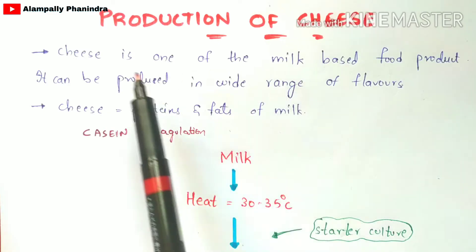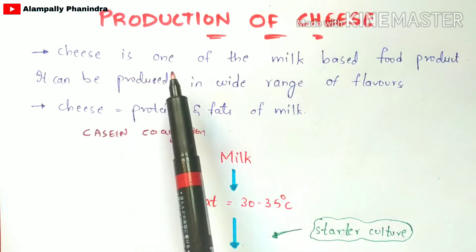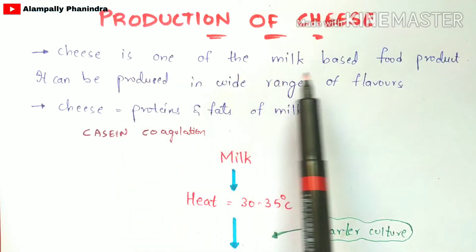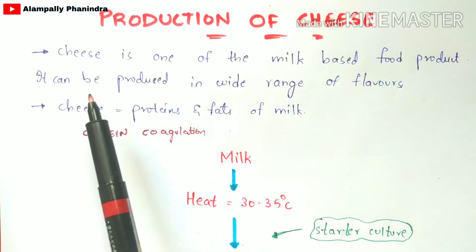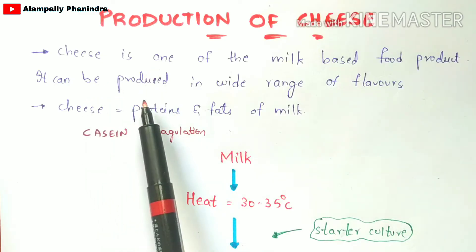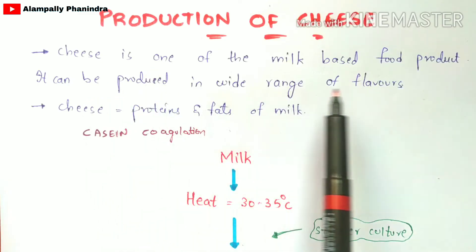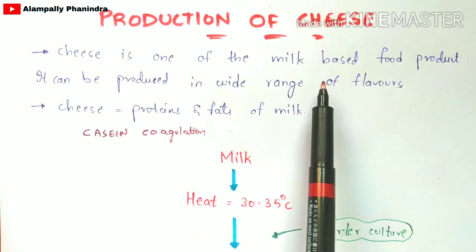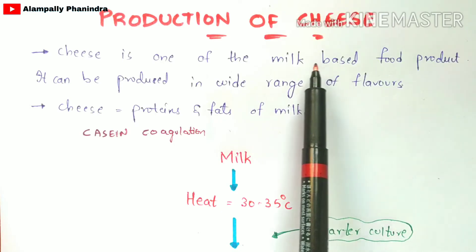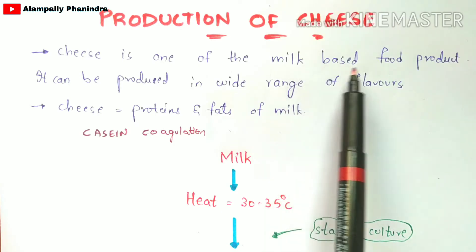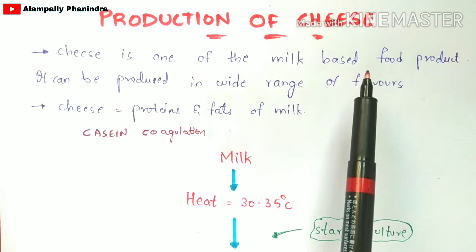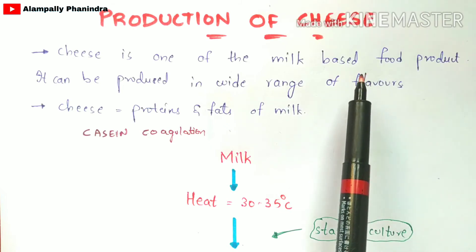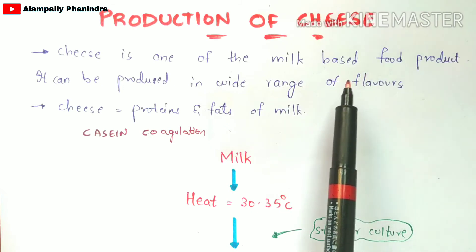So what is cheese? Cheese is one of the milk-based food products which can be produced in a wide range of flavors. Normally cheese is mainly produced from milk by the fermentation process. Hence it is called a milk-based food product and it is available in markets with different types of flavors.